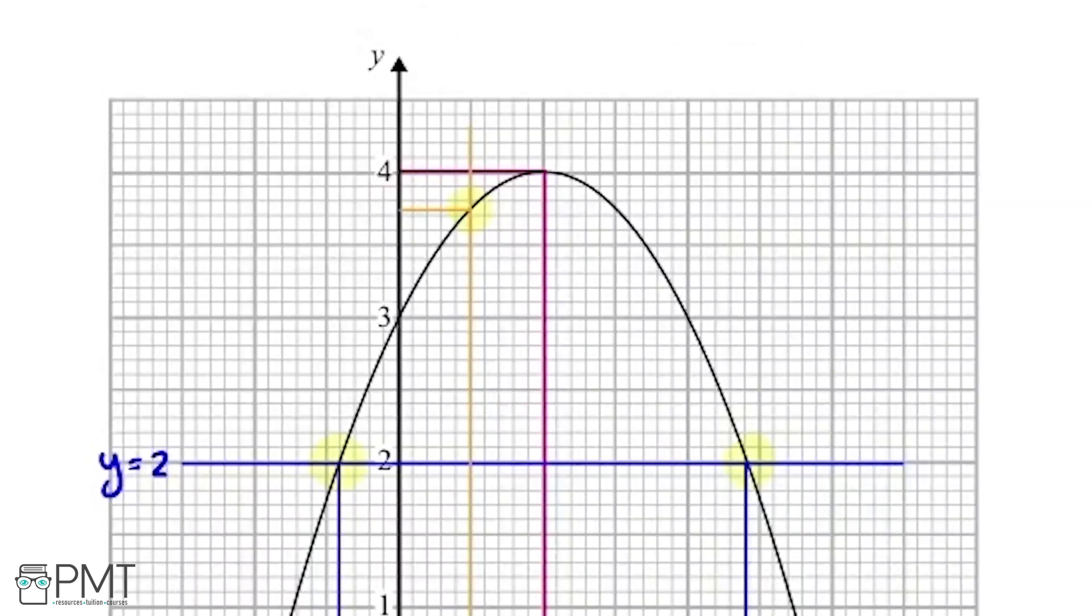That's halfway between 3.7 and 3.8, so it's going to be 3.75. However, it is quite hard to tell exactly where it is, so the mark scheme would accept anywhere from 3.7 to 3.8.